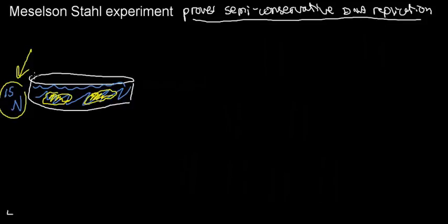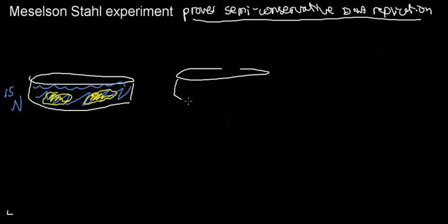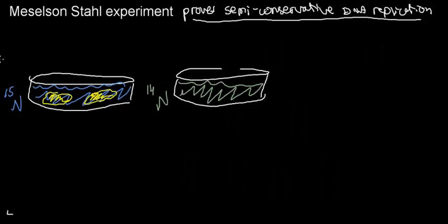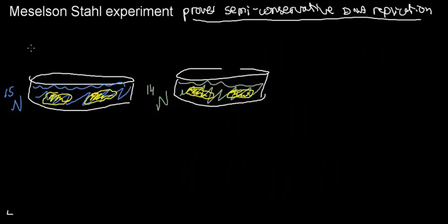Next, we prepared another dish containing a solution with only nitrogen-14. We took these E. coli bacteria and transferred them to this container, letting them populate and reproduce. We know that to reproduce they need to replicate their DNA, and they can only use nitrogen-14 to do that. So let's say we're taking one of these bacteria that had two strands of DNA comprised of nitrogen-15.